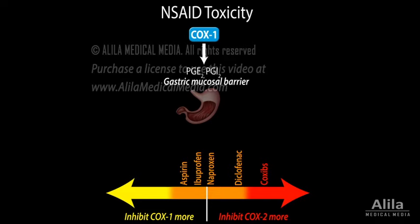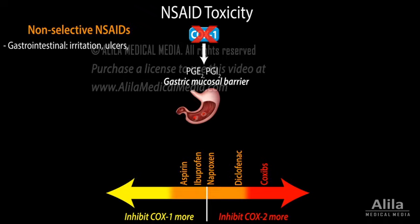COX1-dependent prostaglandins suppress gastric acid secretion and help maintain the gastric mucosal barrier, providing protection to the stomach lining. Because non-selective NSAIDs inhibit COX1, they may cause gastric irritation, peptic ulcer disease, and gastrointestinal bleeding.